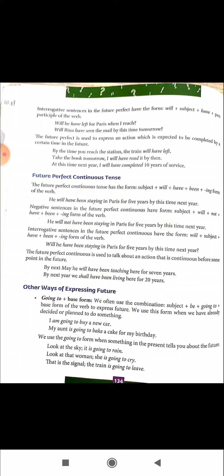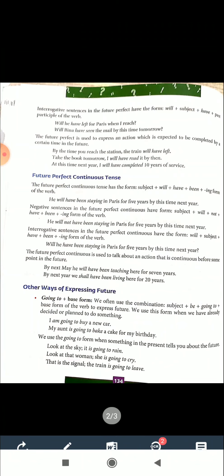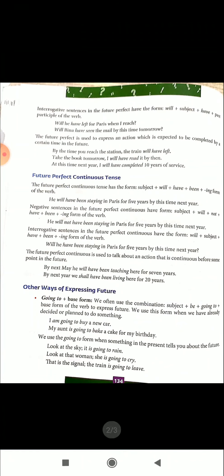For example: 'By the time you reach the station, the train will have left.' He hasn't reached the station yet, but when he does, the train will have already left. Another example: 'Take the book tomorrow — I will have read it by then.' And: 'At this time next year, it will have completed ten years of service.' The action happens in the future and we are sure it will be completed at that definite time.